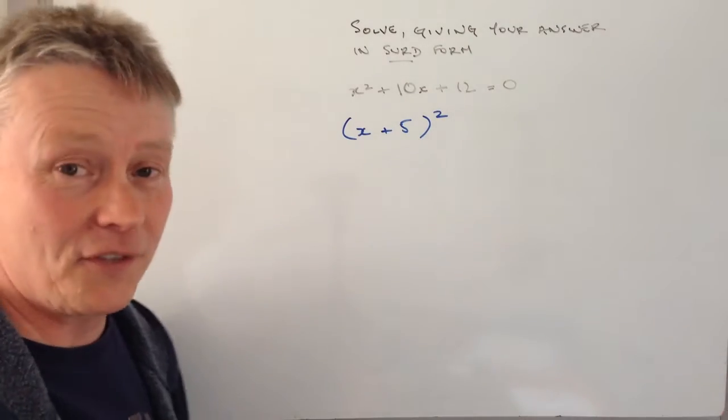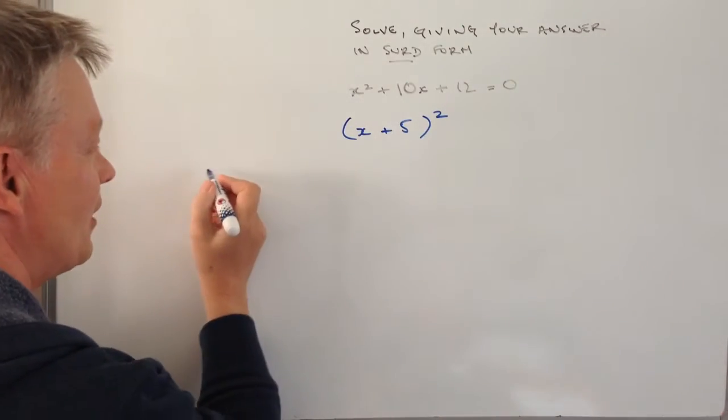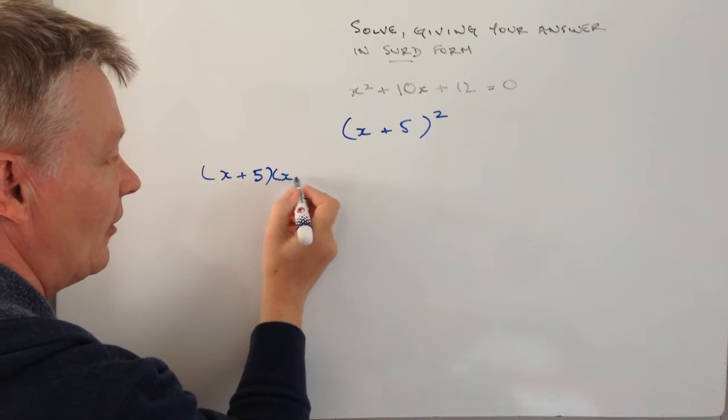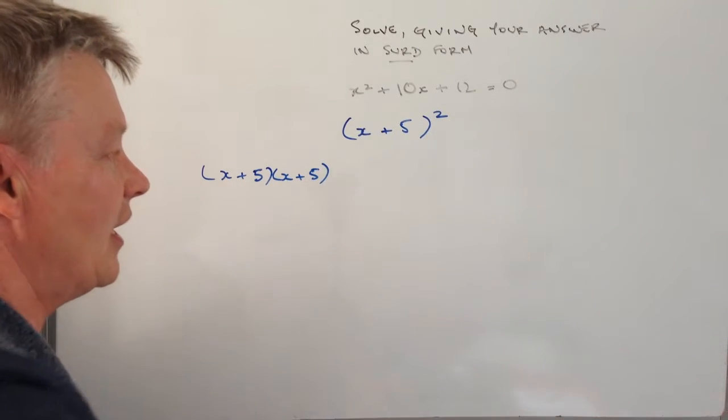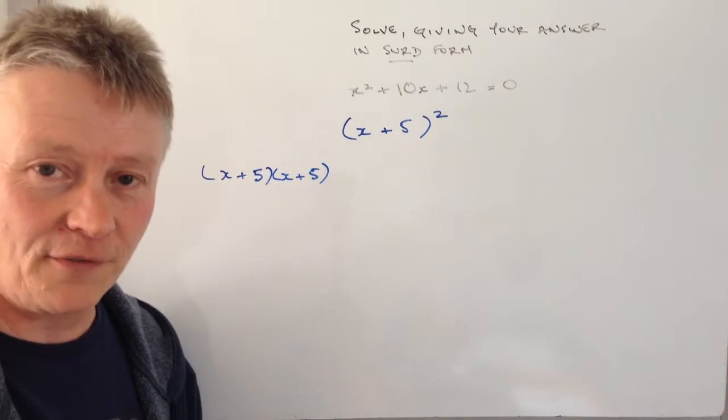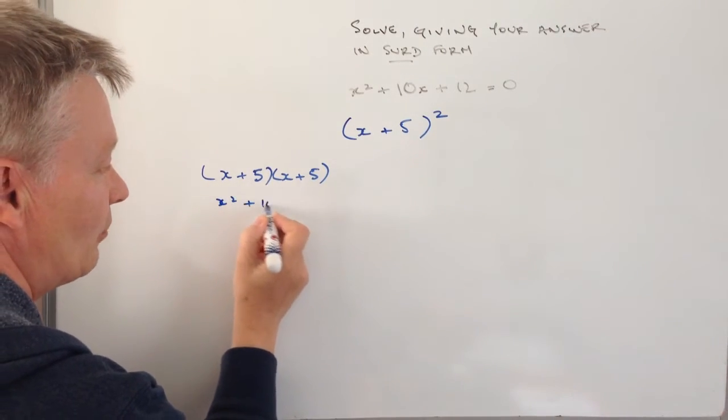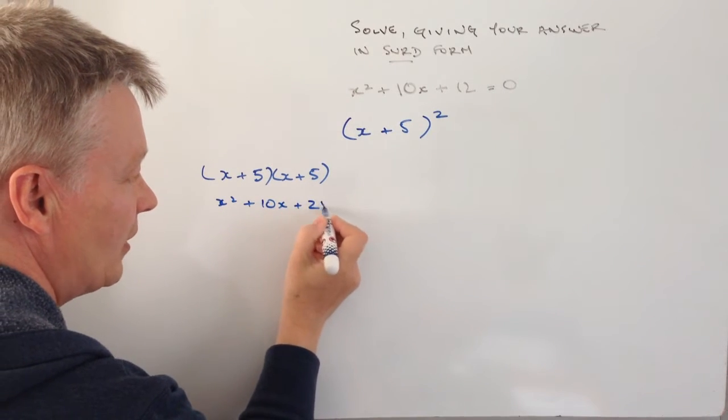If we look at x plus 5 squared, I'm going to work that out at the side here. If I work out x plus 5 times x plus 5, I actually get x squared plus 10x plus 25.